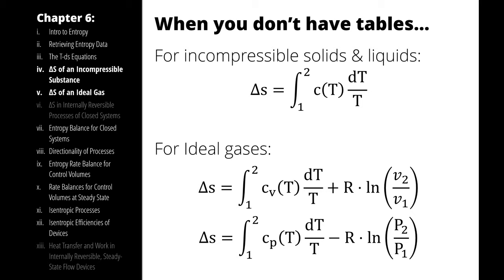Delta S is equal to the integral from 1 to 2 of Cv as a function of T times 1 over T dt plus R times the natural log of V2 over V1. I could also take the integral from 1 to 2 of Cp as a function of T times 1 over T dt minus R times the natural log of P2 over P1. Which of those two equations is more helpful for this particular problem? You're right, it's the bottom one. So I'm going to say delta S of the system is equal to...